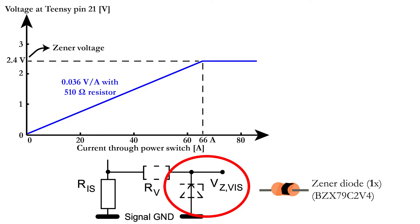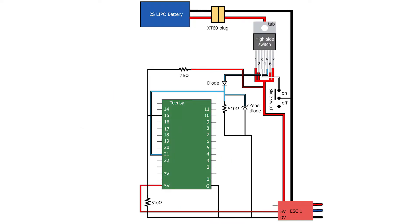The relation between the voltage over the Zener and the load current through the power switch is visualized in the graph. The final schematic for the connection of the power switch is given on the screen. The voltage over the resistor will be measured by Teensy pin 21.